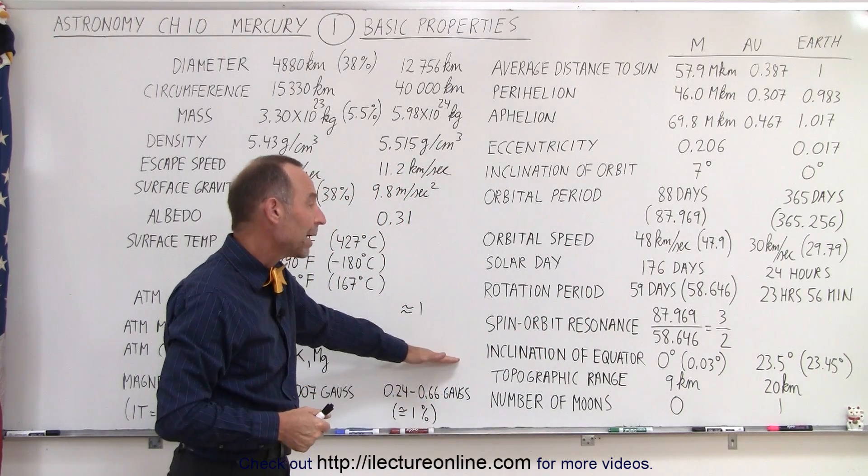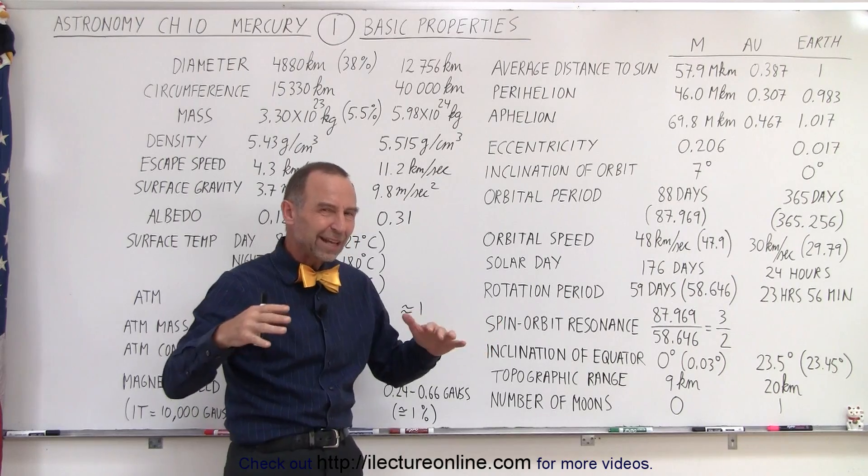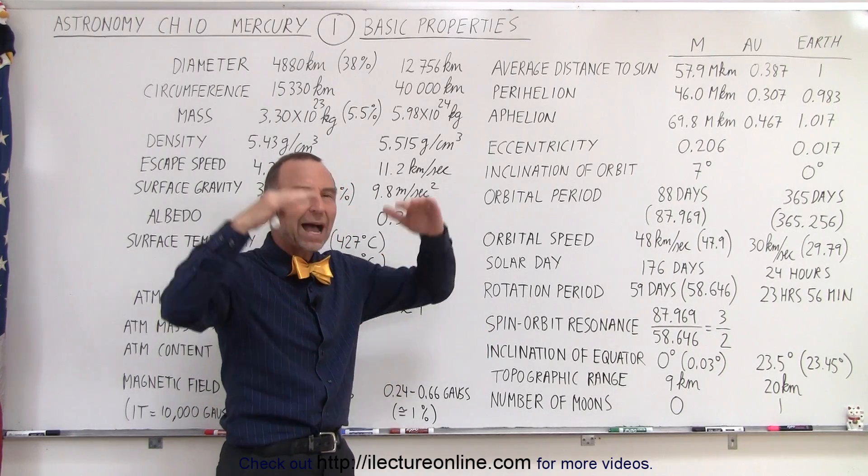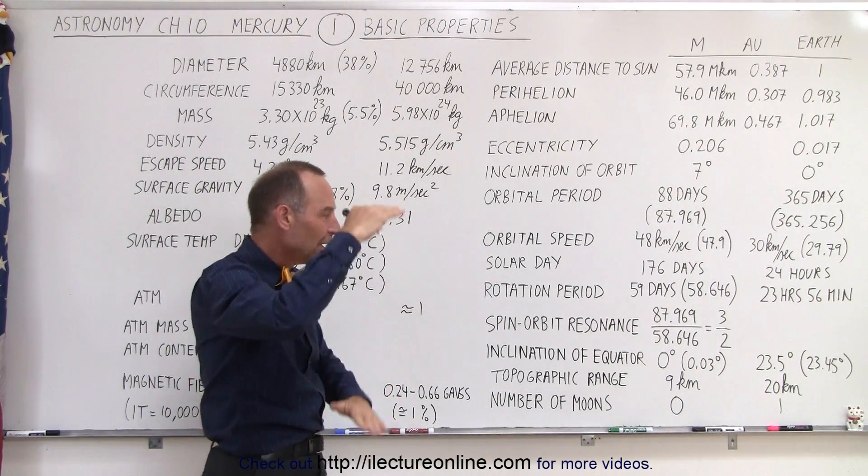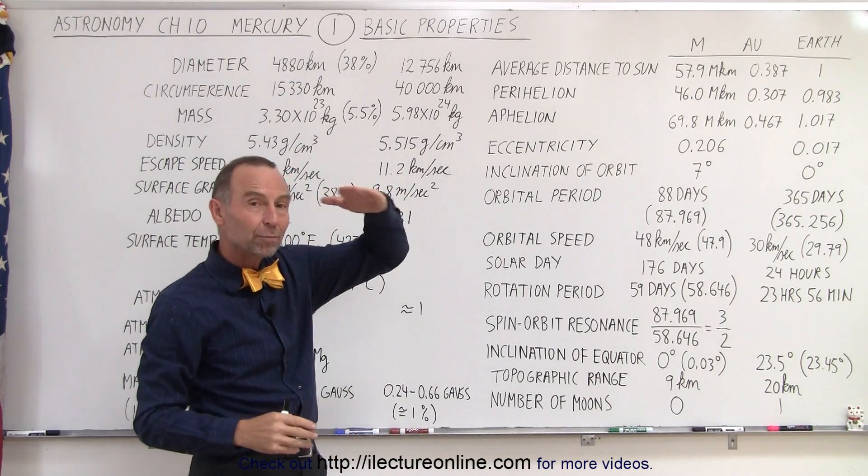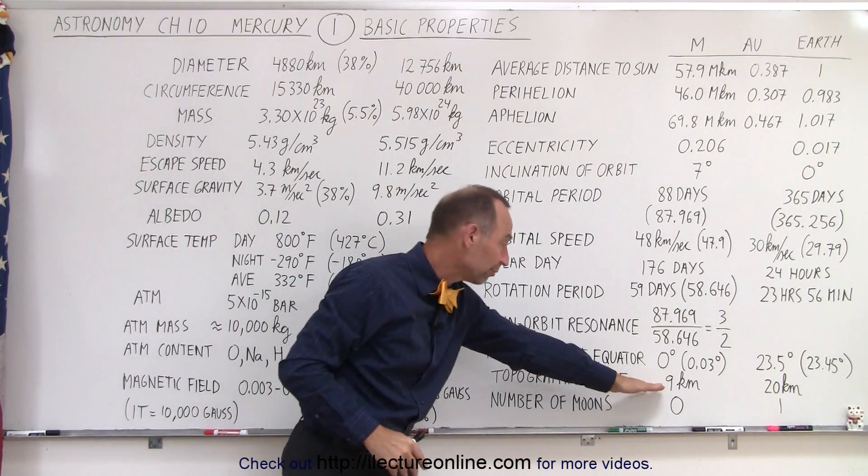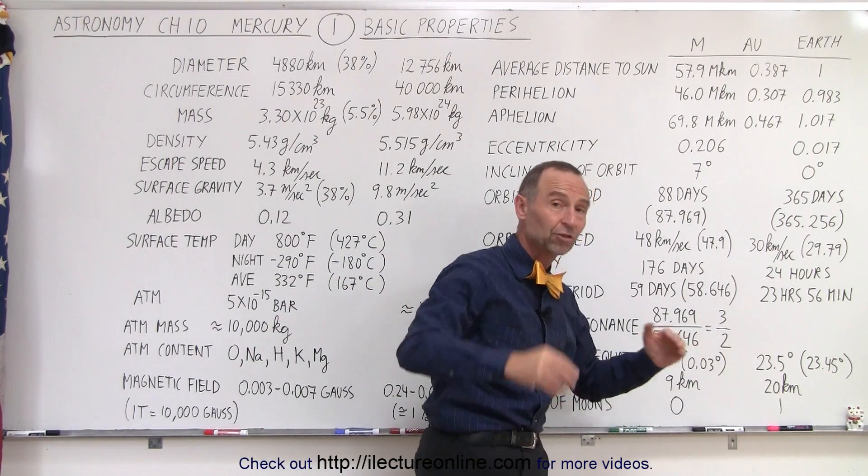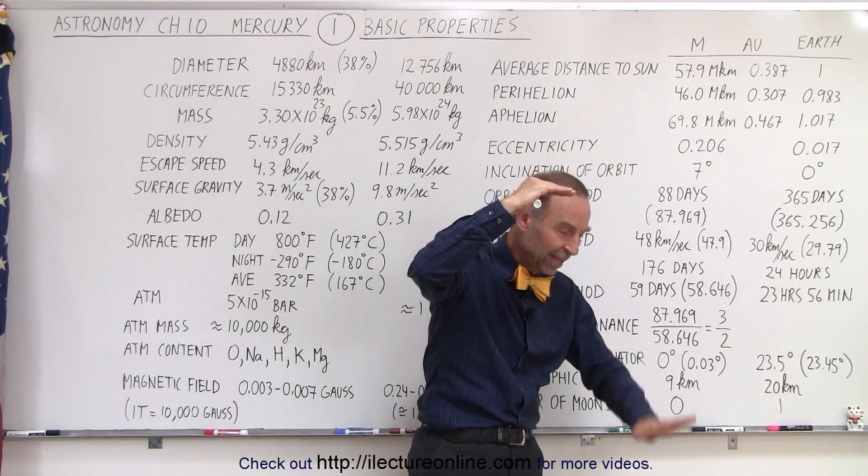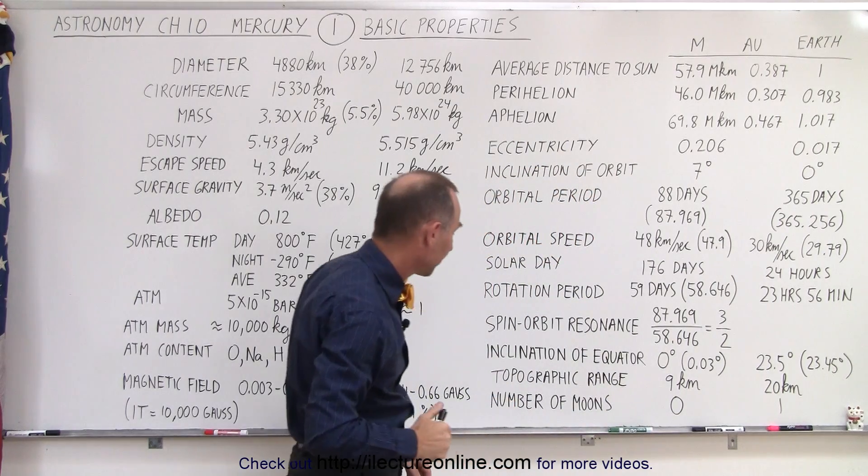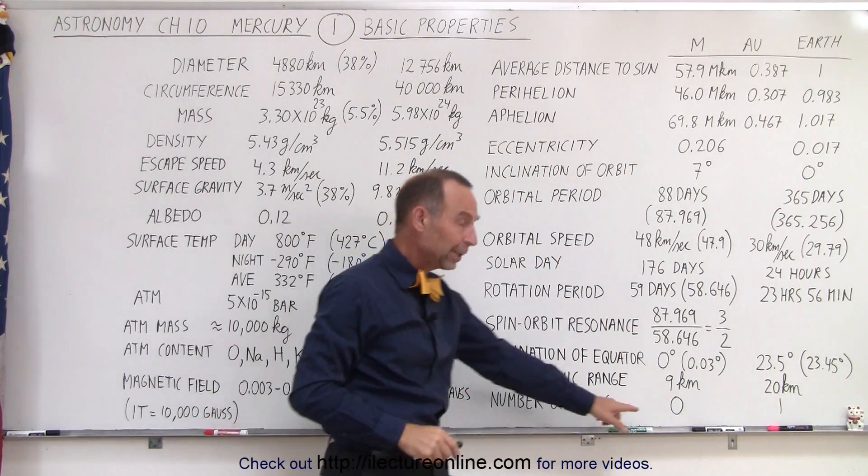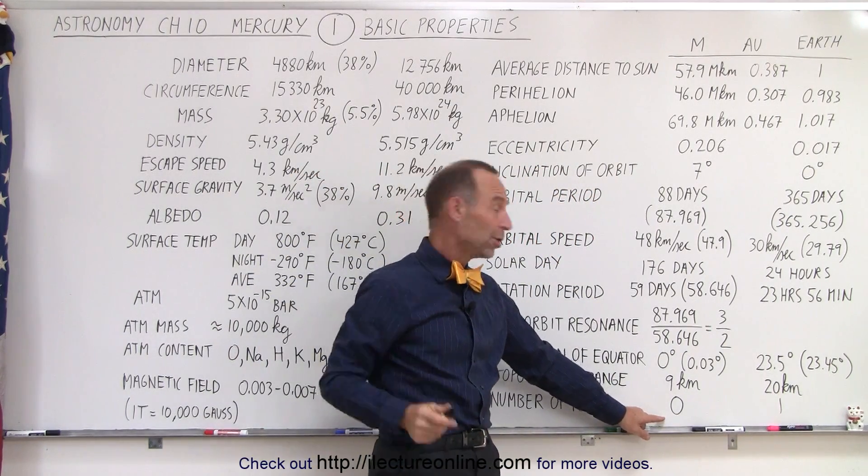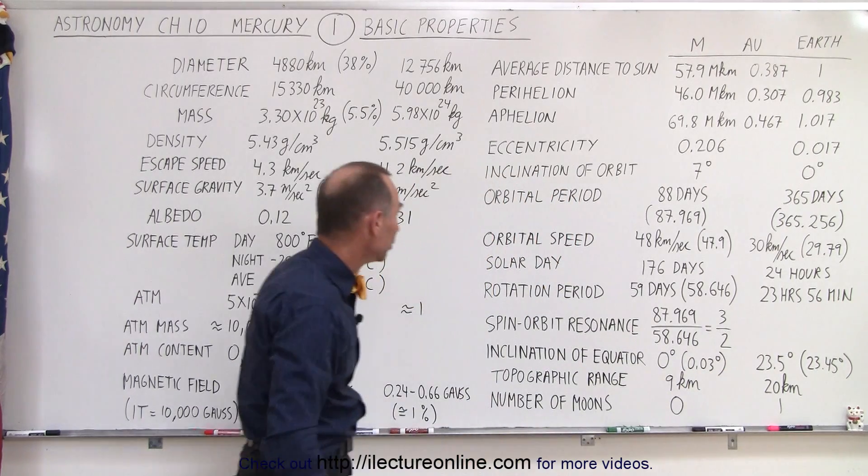The topographic range, when you look at Mercury, it's not as interesting because you don't have very high mountains and very deep valleys. The difference between the highest peak in Mercury and the lowest valley in Mercury is about 9 kilometers. For the Earth, that's 20 kilometers, the difference between the top of Mount Everest and the bottom of the deepest ocean. Number of moons, Mercury does not have any moons, as far as we know. Earth, of course, has the one moon.